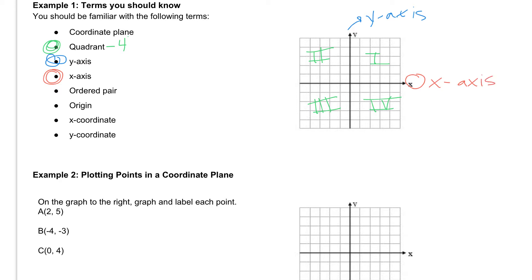Then if we look at an ordered pair, an ordered pair is something that you're graphing. So let's say, for instance, we have this point right here. That's the point 1 comma 0, and this right here is called the ordered pair.